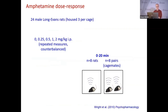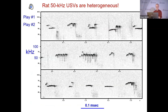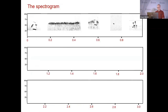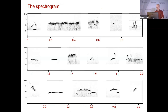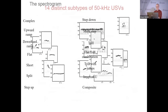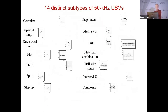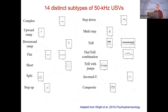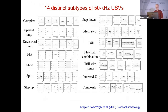Here's our first study from 2010. Jen Wright tested animals either singly or in pairs with an amphetamine dose response. We immediately saw lots of different kinds of 50 kHz calls. We printed them out, cut them into little squares, put them on a long table and started to mix and match. Eventually we decided there were about 14 different piles — and that's how we came up with our 14 different subtypes of calls.